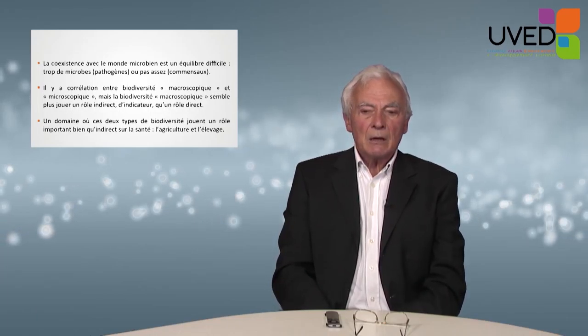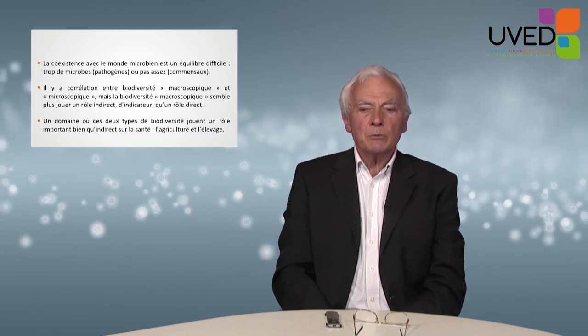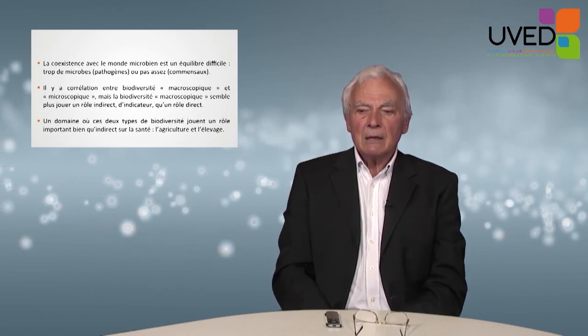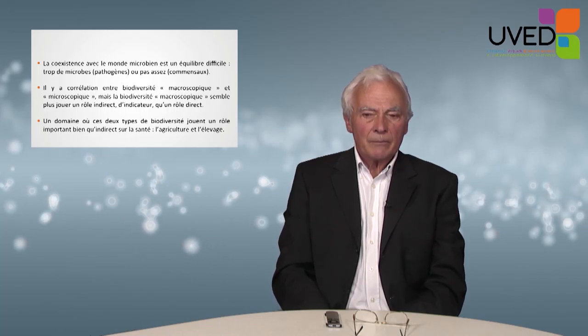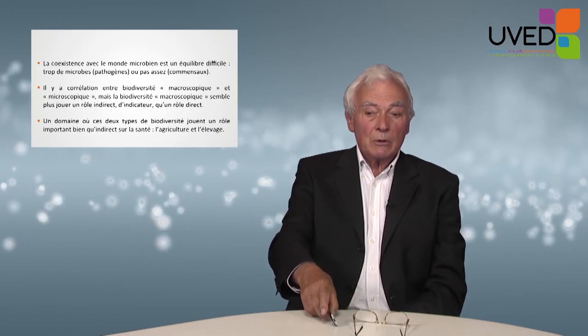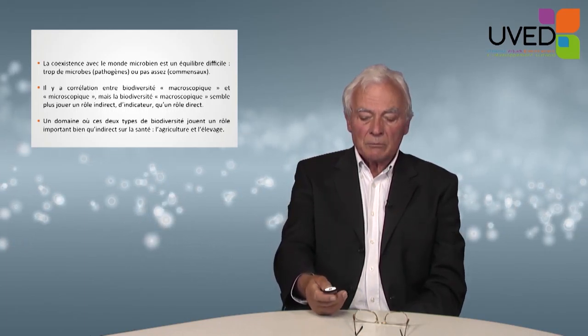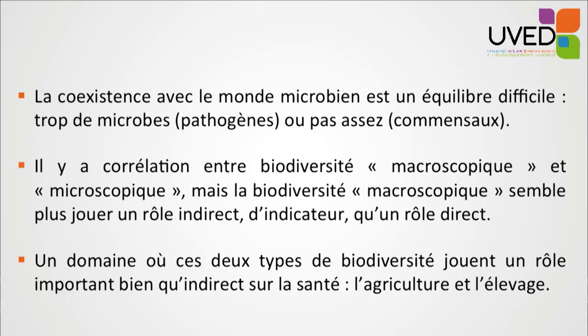There is a correlation between microscopic biodiversity and macroscopic biodiversity, but the macroscopic diversity seems to play a more indirect role — it serves as an indicator. Something important that has an influence on health is agriculture and breeding. We can't grow wheat or breed animals without taking into consideration things such as manure.